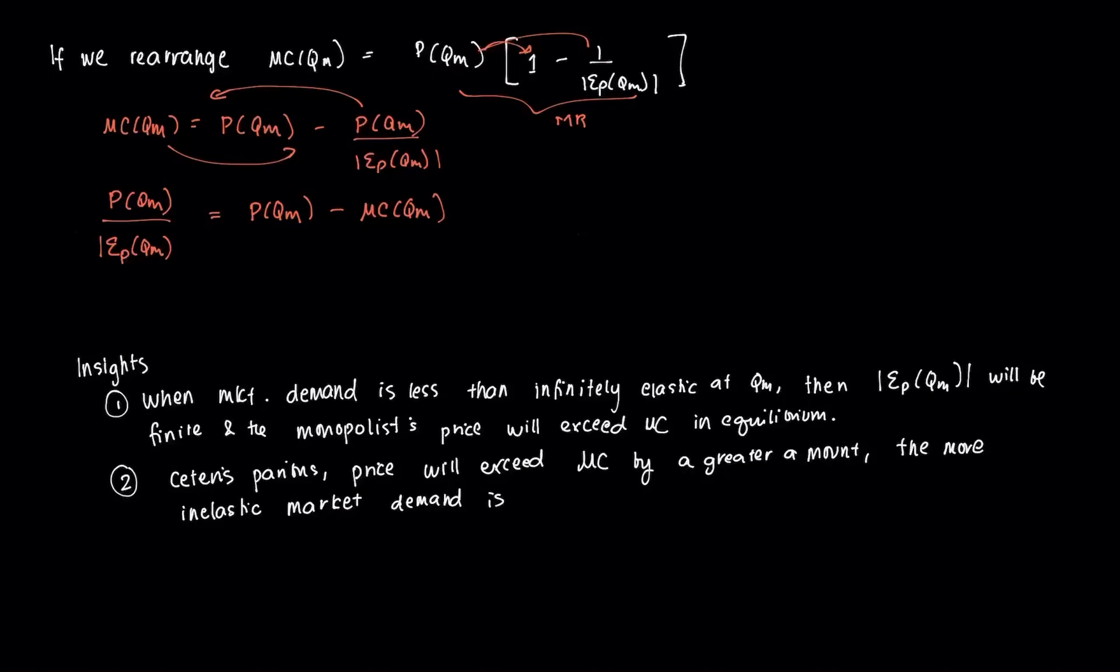Now what I'm going to do is I'm going to multiply both sides by 1 over P(QM) or just the price in general. And I'm going to be left with, so this one and this one will cancel out.